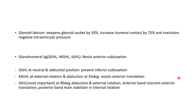The glenoid labrum deepens the socket as mentioned. The glenohumeral ligament has superior, middle, and inferior components, and resists anterior subluxation. The superior glenohumeral ligament at neutral position prevents inferior subluxation. The middle at about 45 degrees resists anterior translation. The inferior at about 90 degrees abduction — the anterior band restrains anterior translation, and the posterior band maintains stability in internal rotation.